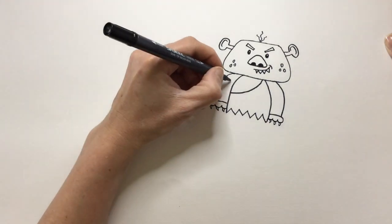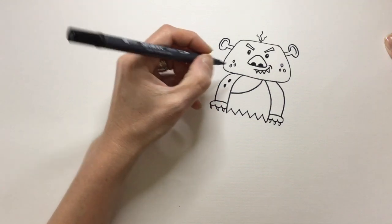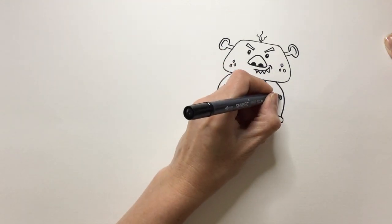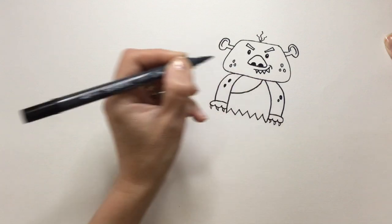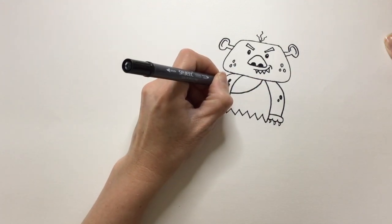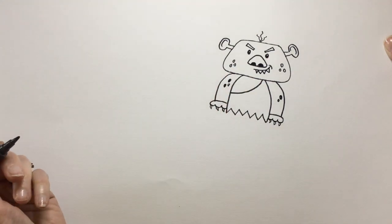I'm going to do some more of those spots on his skin. Do another one here. There we go. Maybe one more there. Right. We're ready for his legs.